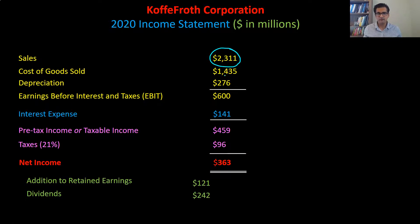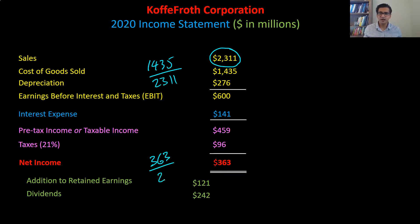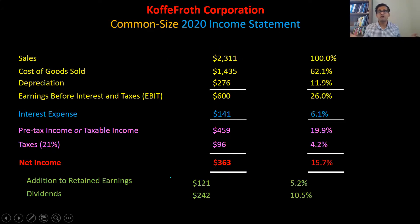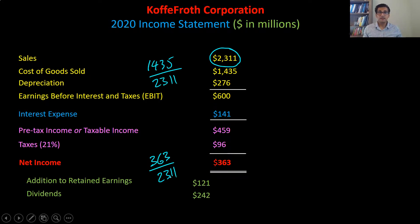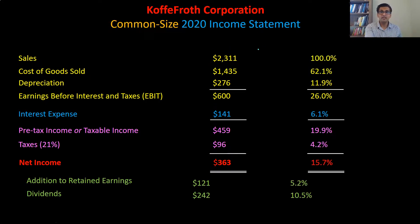So you take cost of goods sold — say 1,435 — and divide it by sales — say 2,311 — and look at what that percentage is. Net income, if it's 363, you divide 363 by 2,311. When we do this for each and every line item on the income statement, we get a common size income statement. The regular income statement is in dollar figures, but the common size one is in percentages.